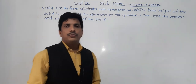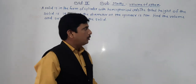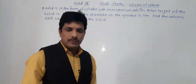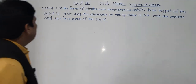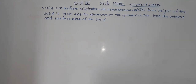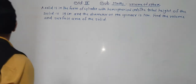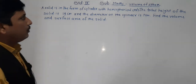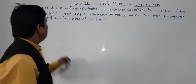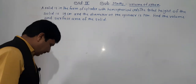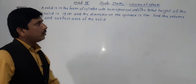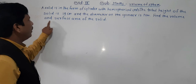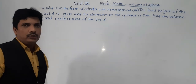Hello everybody. Today we are going to see some problems which depend on the concept of volume of sphere. Our first problem is: a solid is in the form of a cylinder with hemispherical ends. The total height of the solid is 19 cm and the diameter of the cylinder is 7 cm. Find the volume and surface area of the solid.